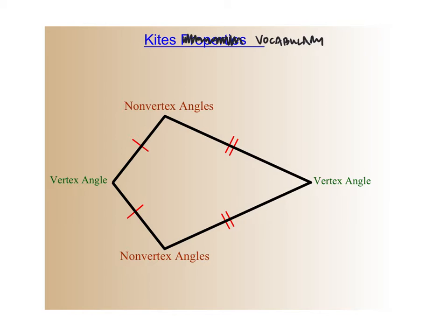We're going to talk about some properties. Here are the diagonals of a kite — the red segment and the green segment connecting non-consecutive vertices. Those are our diagonals. Let's get into some properties with regards to those in a moment.